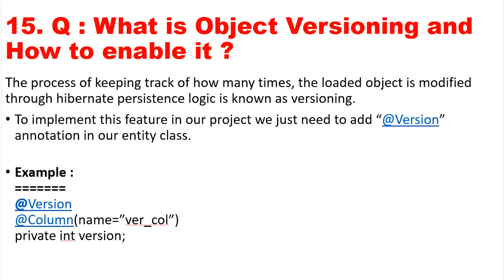The next question is: what is object versioning and how to enable this feature in Hibernate? The process of keeping track of how many times a loaded object is modified through Hibernate persistence logic is known as versioning. It only tracks changes made through Hibernate, not direct database changes. To implement this, we define the @Version annotation at the column level with @Column specifying the column name, and define a property in the entity class: private int version, where the data type is integer.